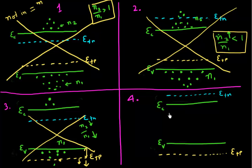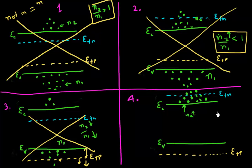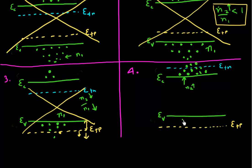Now in scenario four, I've moved the quasi-Fermi level for electrons deep into the conduction band, so I have a large N2. I've also moved the quasi-Fermi level for the valence band below the valence band, making a dent in the number of electrons there, decreasing N1. I've increased N2 and decreased N1 — this is the best I can do. In this case, I can have N2 divided by N1 greater than 1, meaning population inversion is possible.